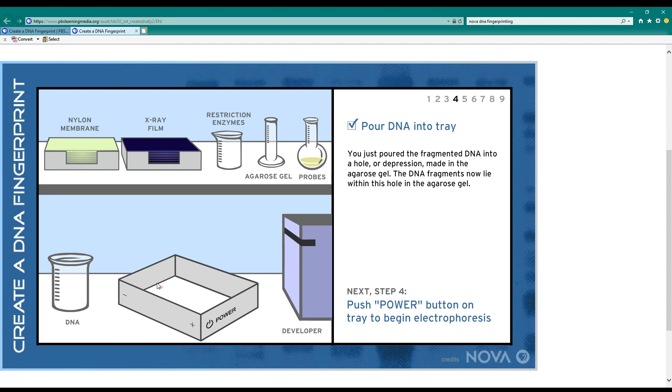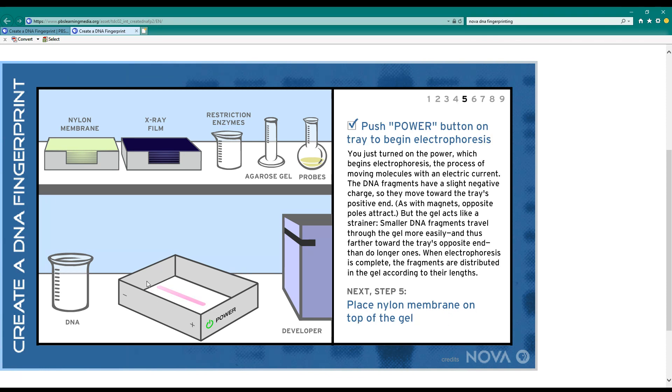Now what's going to happen is that tiny pieces of DNA move quickly and larger chunks of DNA are not able to move as quickly. So when I turn the power off I'll find the DNA chunks are spread out according to size. Pause the video now and read this bit if that didn't make sense to you.